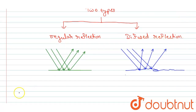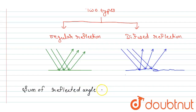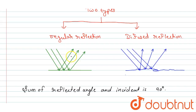First, let us know what the law of reflection states. The law of reflection states that the sum of the reflected angle and the incident angle is 90 degrees. Also, all the incident rays are parallel to each other and the reflected rays are parallel to each other.